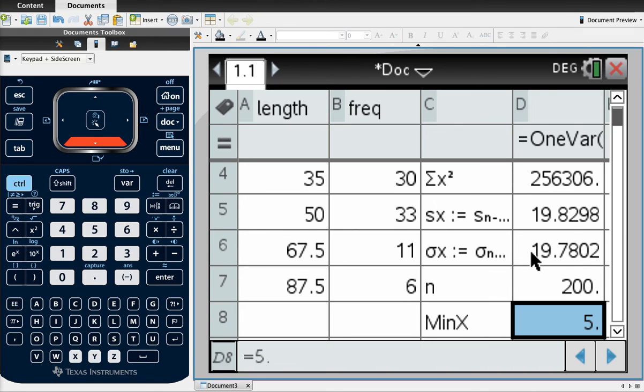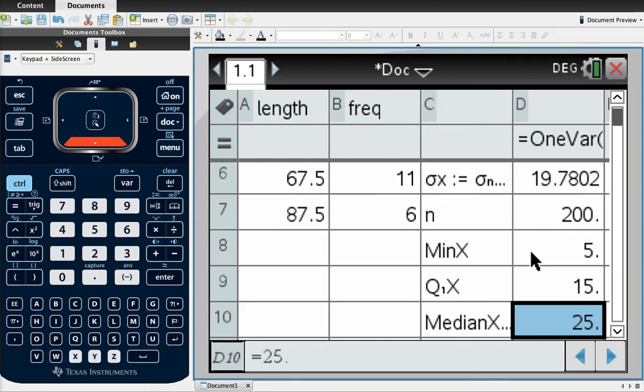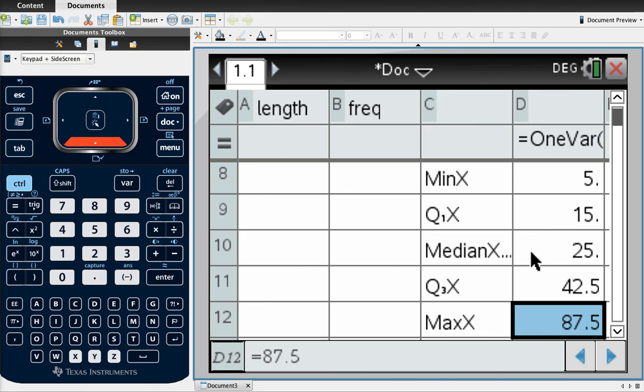Min X, the lowest value of X. Q1 is the lower quartile, the 25% bit of data. Median, obviously the 50th percentile. 75th percentile, Q3, upper quartile. And then the maximum value.